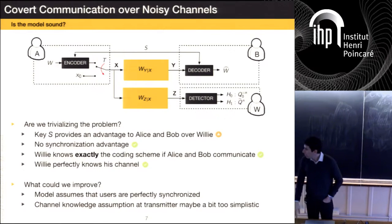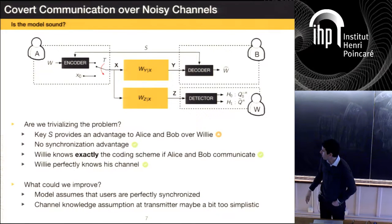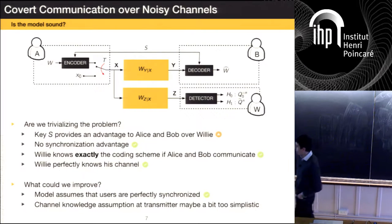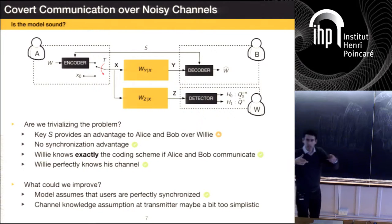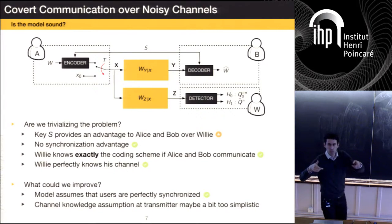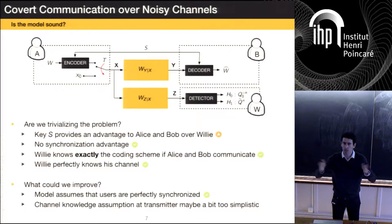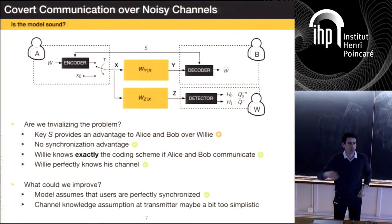What could we improve? One thing we could do — and I'll address this a little because it's not too hard — is essentially remove the synchronization assumption. What if instead of a transmission window that starts and stops at predicted times, we hide that in a bigger window? We'll see there's a little bit of a gain.